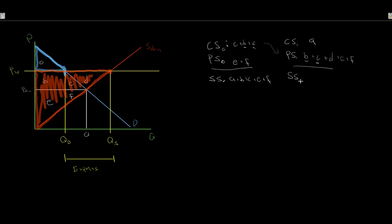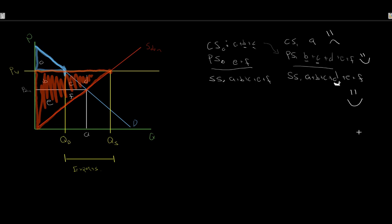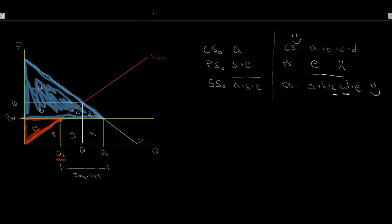Our updated social surplus is A plus B plus C plus D plus E plus F. Society is better off by area D — that was unobtainable before. Winners and losers: consumers are upset, they have to pay the higher world price and aren't buying as much. Producers are very happy — they produce more and sell at a higher price. Even though consumers lost, the gain to producers was so much greater that social surplus increased. Society overall is better off.